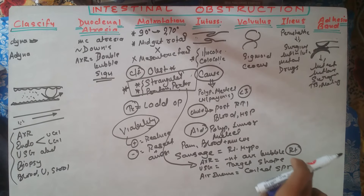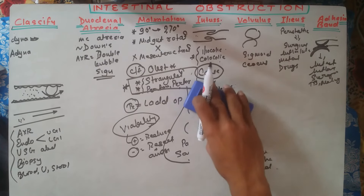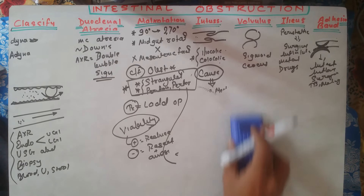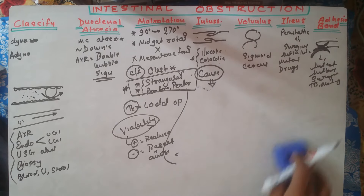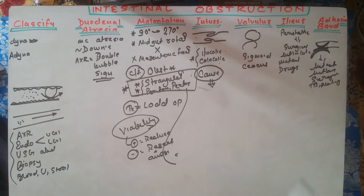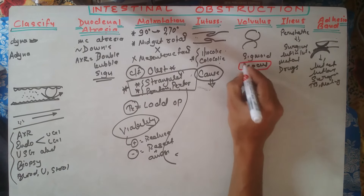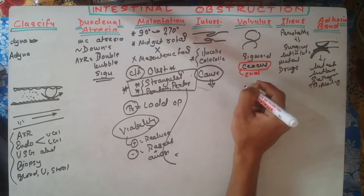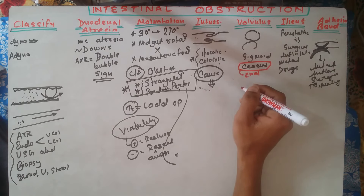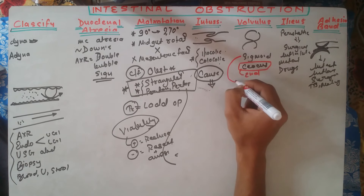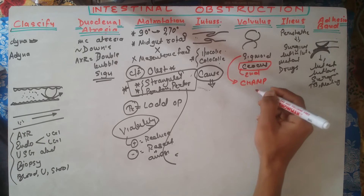Volvulus is the twisting or rotation of a part of the gut, most commonly seen in the sigmoid colon. Cecal volvulus is the second most common site. Sigmoid volvulus is associated with various conditions remembered by the mnemonic CHAMP: C for Chagas disease.